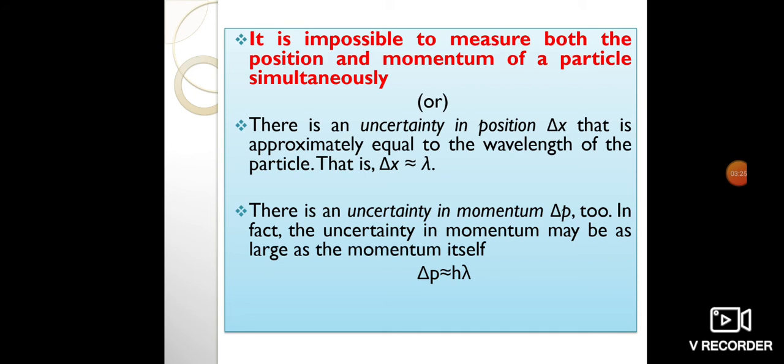It is impossible to measure both the position and momentum of the particle simultaneously. There is an uncertainty in position, delta x, that is approximately equal to the wavelength of the particle. There is uncertainty in momentum, delta p. In fact, the uncertainty in momentum may be as large as the momentum itself, indicated as Δp ≈ h/λ.